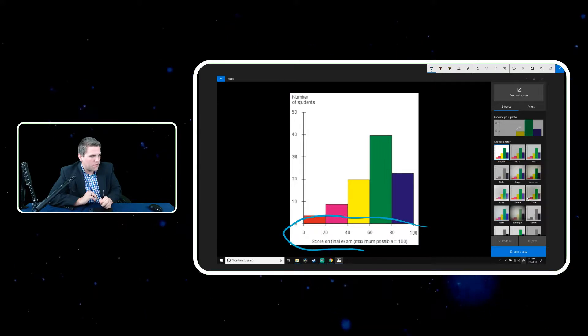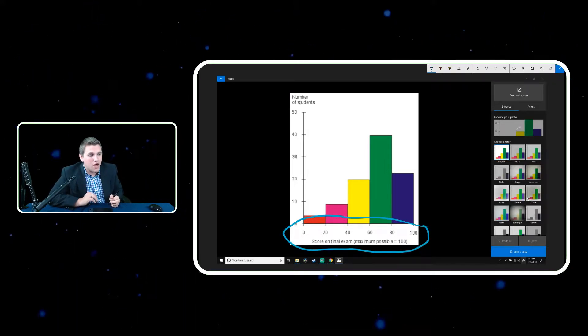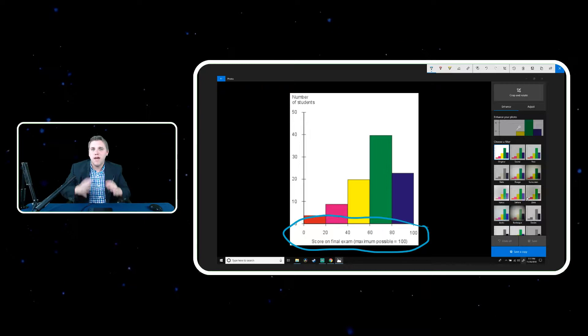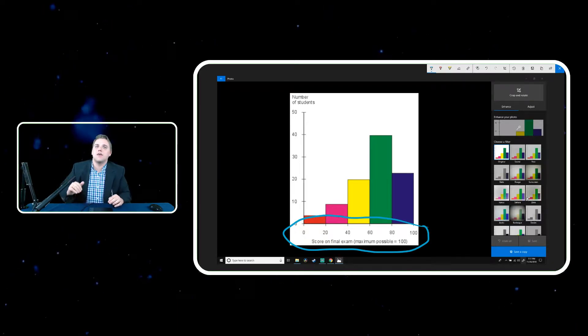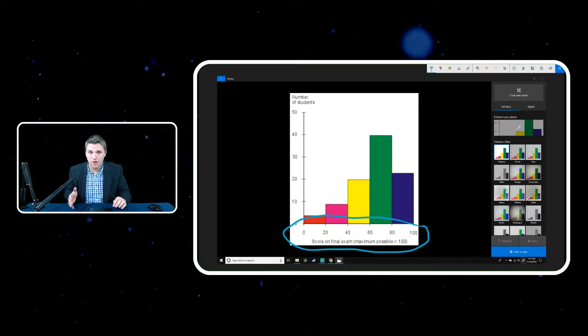So first off, this variable right here is a numerical variable. It's represented by the score on a final exam. Keep in mind that histograms are meant for only organizing numerical variables. They are not meant for organizing categorical variables.